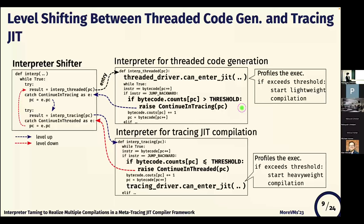In this interpreter, you can write the rule to shift to the interpreter for tracing JIT compilation. The rule counts how many times the bytecode is executed, and when it exceeds a threshold — which can be defined by the user — an exception on the interpreter is triggered and it goes back to the higher compilation level, where it profiles again. If the count again exceeds the threshold, it also does the tracing compilation. You can also write a level-down rule: if the count does not exceed the threshold, you can go down to the lower level to continue execution.